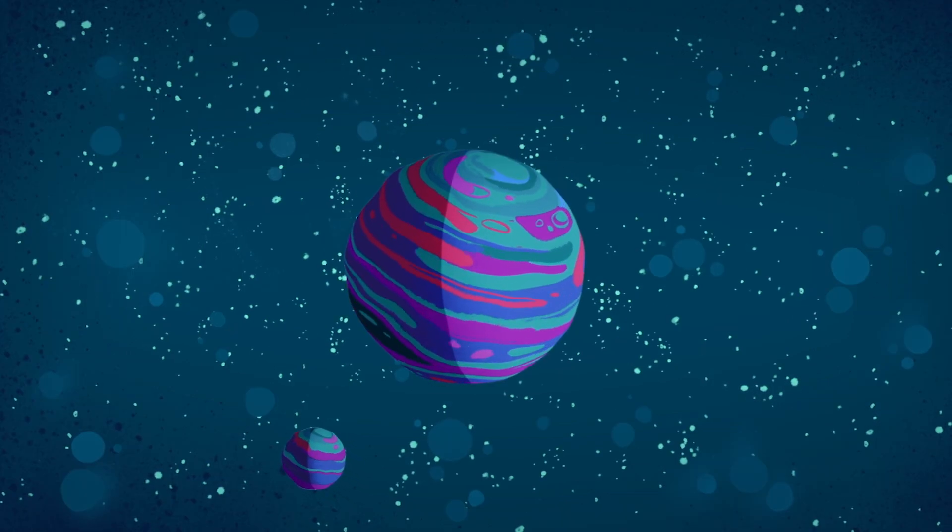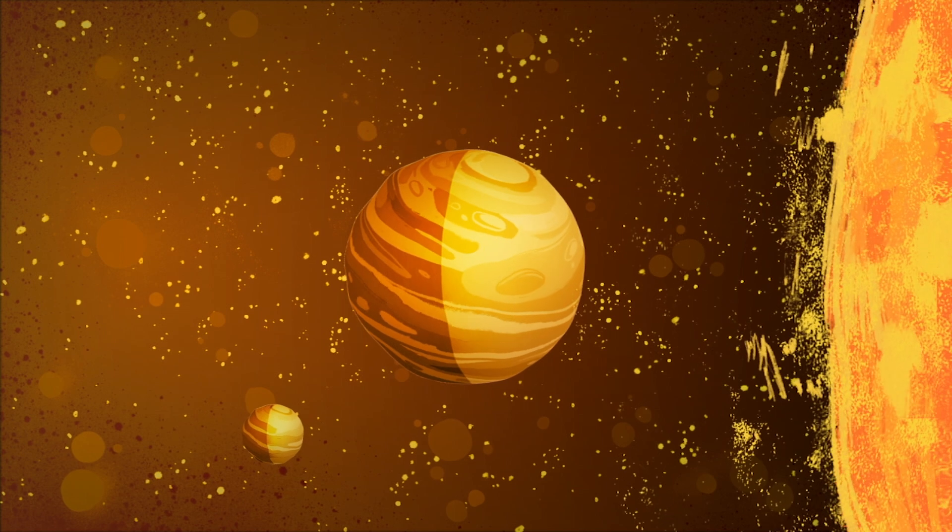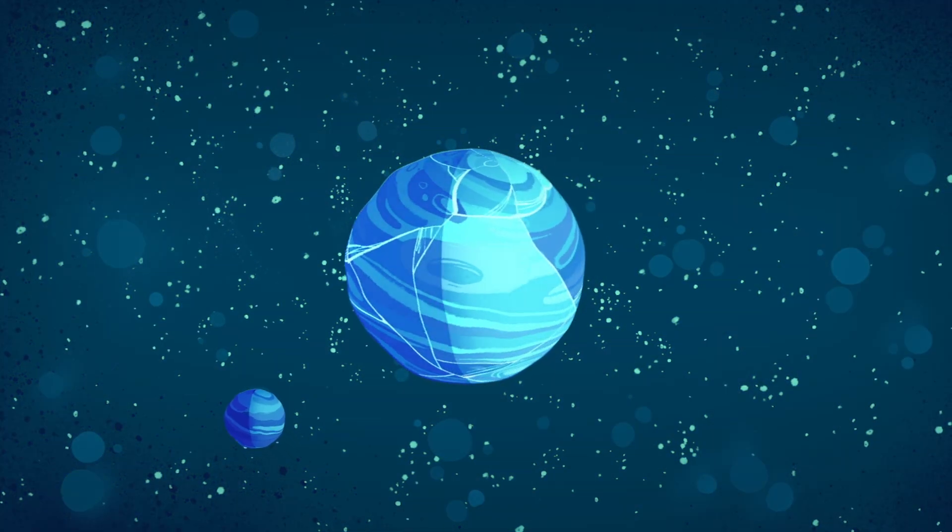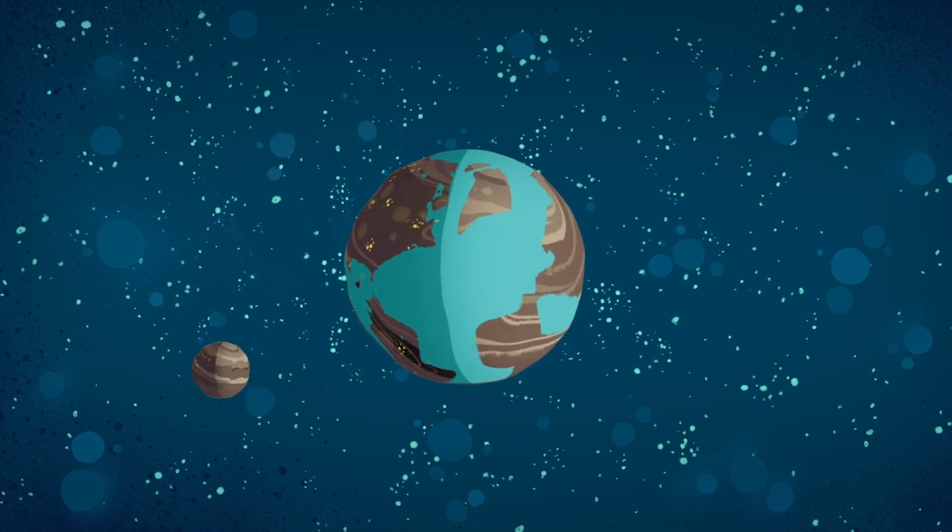But if one of these planets is close in size to the Earth and orbits not too close and not too far away from its parent star, it could be rocky and warm enough to have oceans and perhaps life.